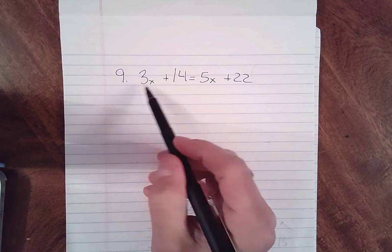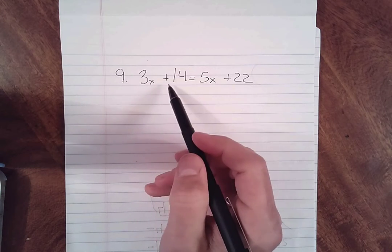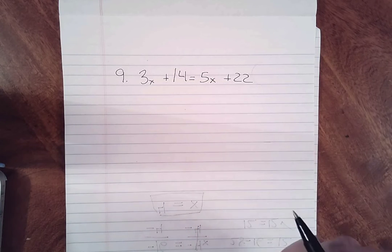Here we have number 9. Number 9 states 3x plus 14 is equal to 5x plus 22.